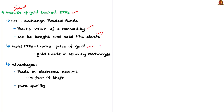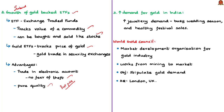Gold ETFs have additional advantages: trade is done through a dematerialized or electronic account, eliminating theft risk, and the gold traded is pure in quality. The news article also notes that the Indian gold market has revived in 2019, with overall jewelry demand increasing due to a busy wedding season and healthy festival sales. The World Gold Council is the market development organization for the gold industry, working across all parts from mining to market, with its main objective being to stimulate global demand for gold. Its headquarters is located in London, United Kingdom.